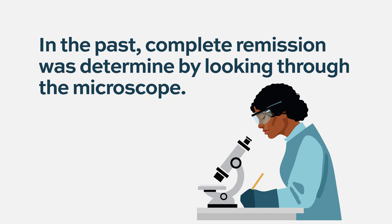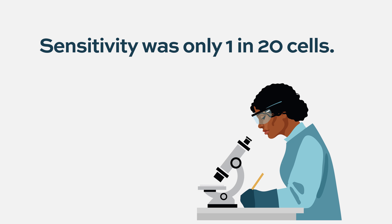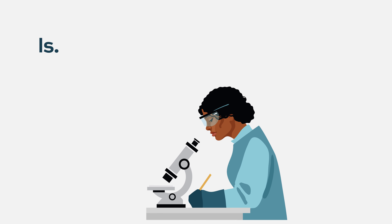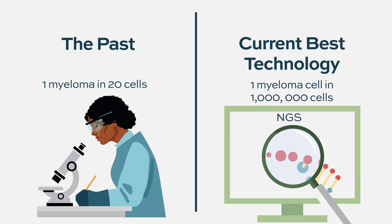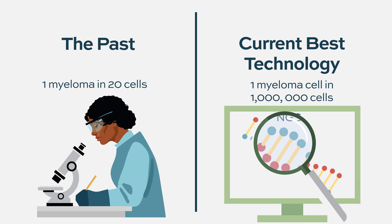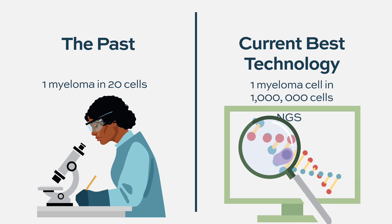The way we used to measure multiple myeloma is not good enough. Complete remission used to be defined by looking through the microscope — which by today's standards is very crude. Using the microscope, you could only identify roughly one in 20 bad cells, or five cells out of 100. We can now, using MRD testing with our best technology, identify one abnormal cell in one million cells. The human eye is nowhere near that good.